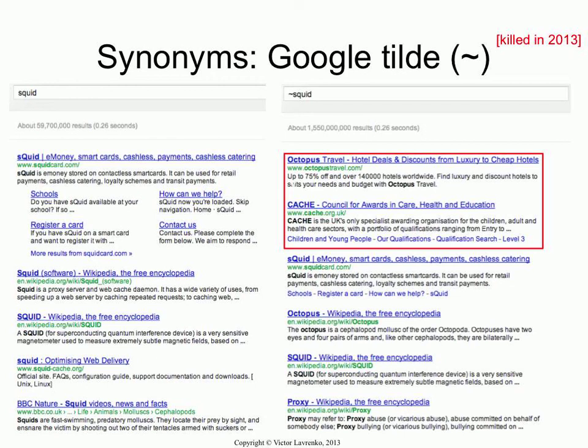This is a really interesting example, and it's good that you're seeing it. What Google is doing is it's actually figured out that one of the prominent senses of squid is the caching proxy server — squidcache.org — and cache is a very important term for that sense of squid. So it is using cache as an expansion for the term squid, and it's getting this Council for Words and Care, Health, and Education. It makes you smile when you catch Google doing things like that.